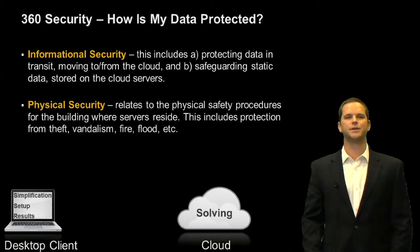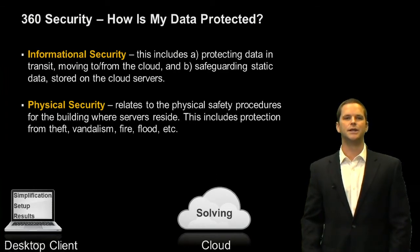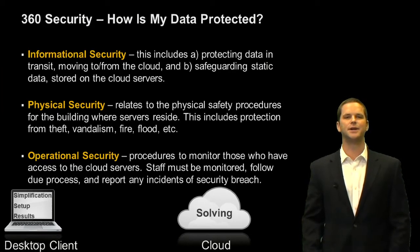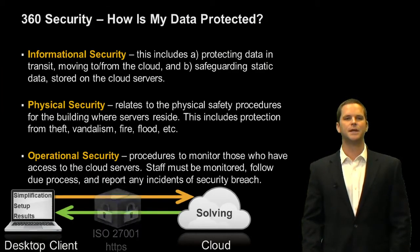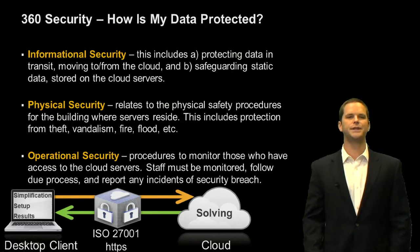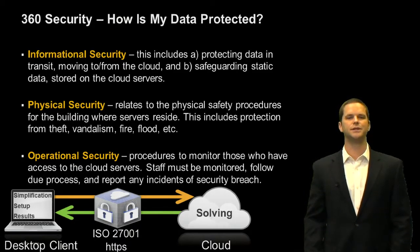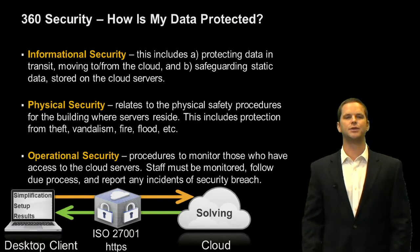The second pillar is physical security, which relates to the physical safety procedures for the building, including protection from theft, vandalism, and natural disasters. The last pillar is operational security — procedures in place to monitor anyone who has access to the cloud server, with very strict security protocols they must follow. Ultimately, we're using the ISO 27001 standard, which is the exact same standard with audit capability that banks and lending institutions use. In addition, we're using the HTTPS secure protocol.